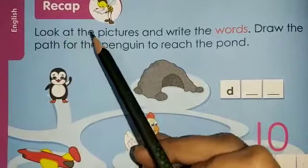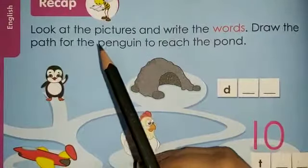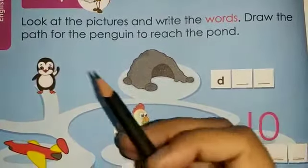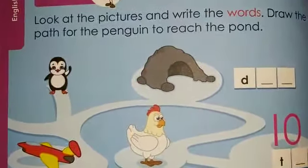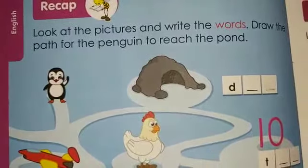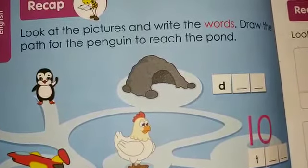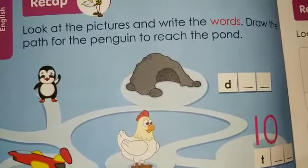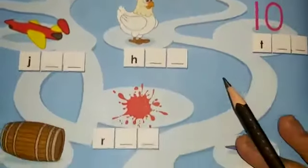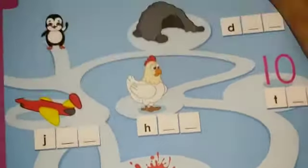What you have to do in this? Look at the pictures and write the words. Draw the path for the penguin to reach the pond. This is the penguin, and this penguin has to reach the pond. We have to make this penguin reach the pond. We need to solve all these words — we will identify these pictures and write down all the words. The pond is at the bottom. We will draw an arrow as we go through one by one.